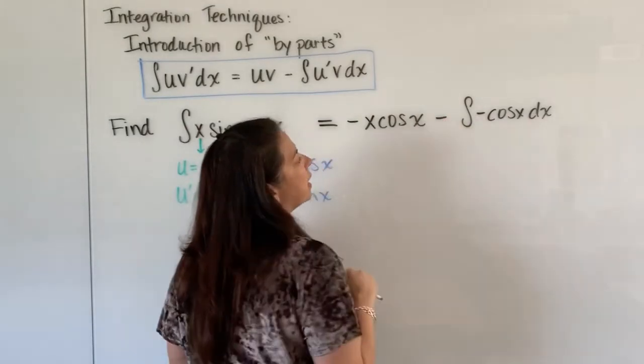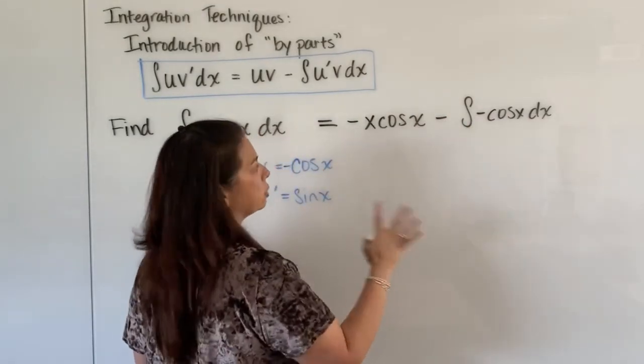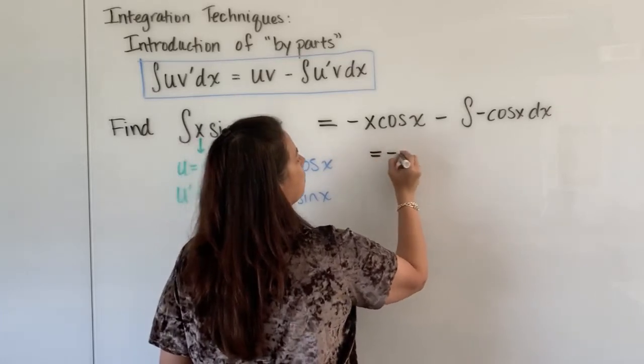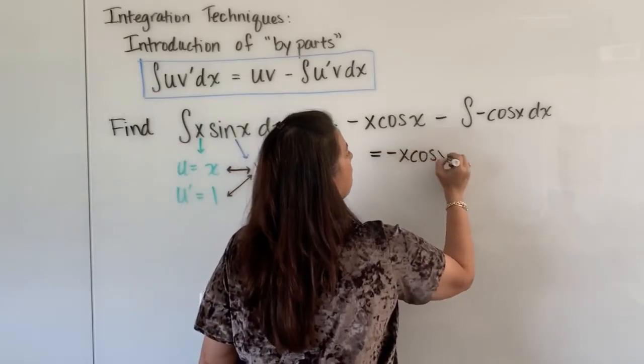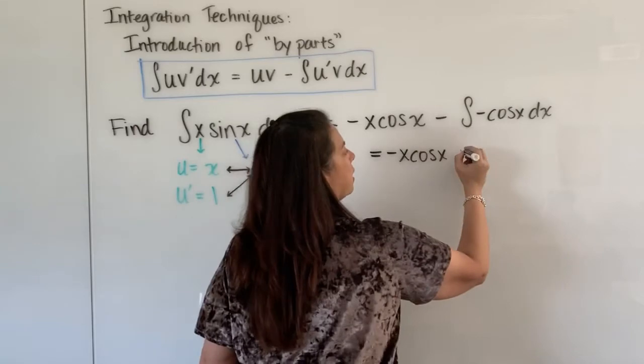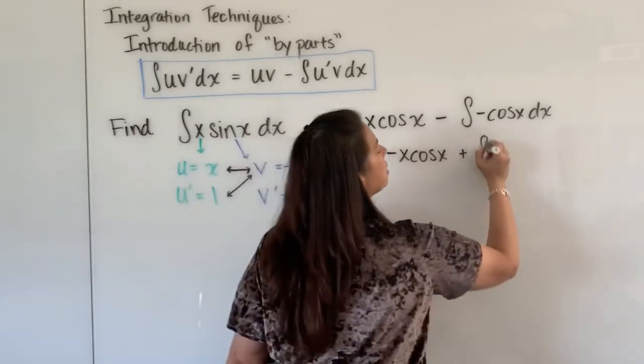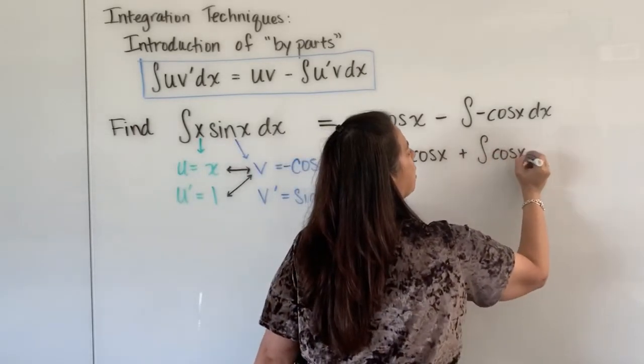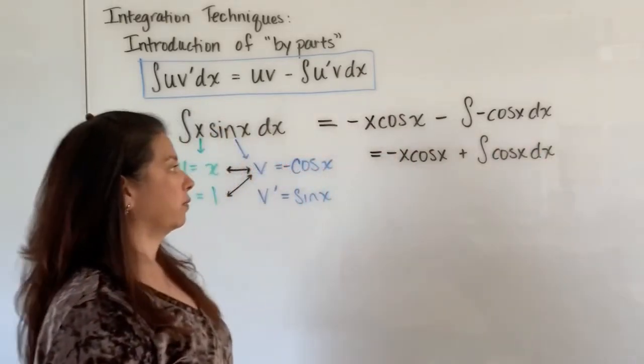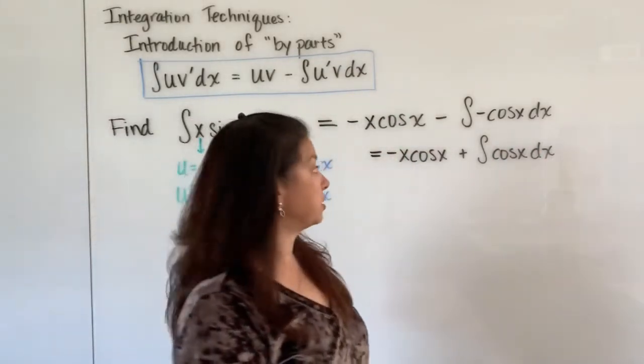So I'm going to do that just to clean things up. So I have this is equal to negative x cosine x. When I bring this out I now have plus but still the integral cosine x dx because I haven't dealt with the integral of cosine x dx just yet.